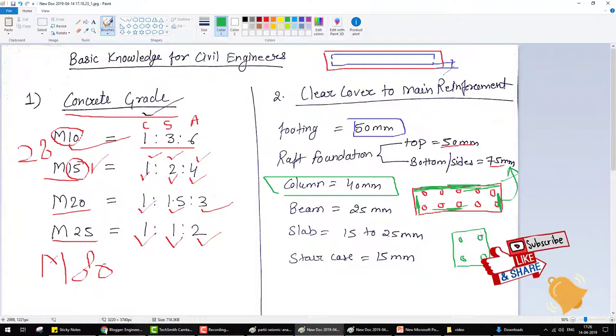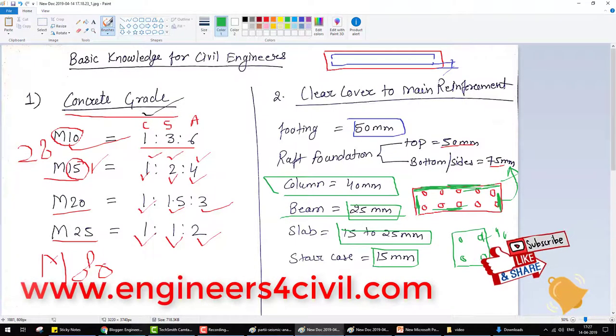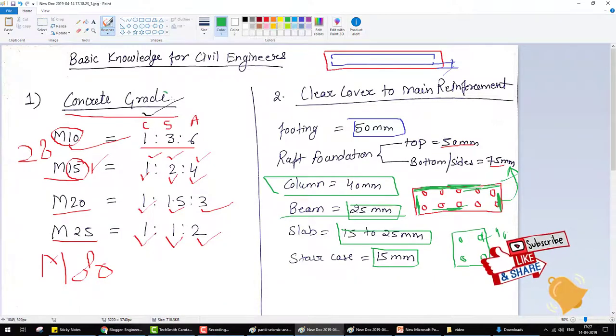Cover from all sides - clear cover is 40mm. For beam, at least 25mm clear cover. For slab, 15 to 25mm clear cover. And for staircase, 50mm clear cover.